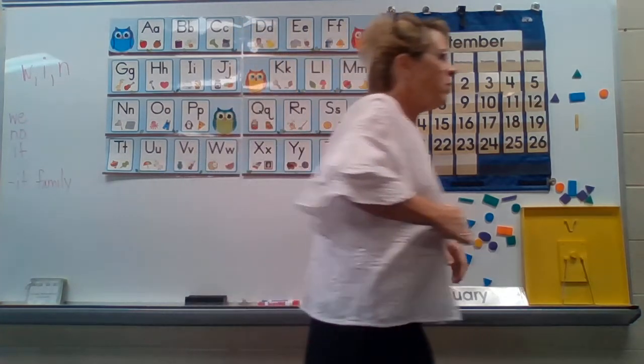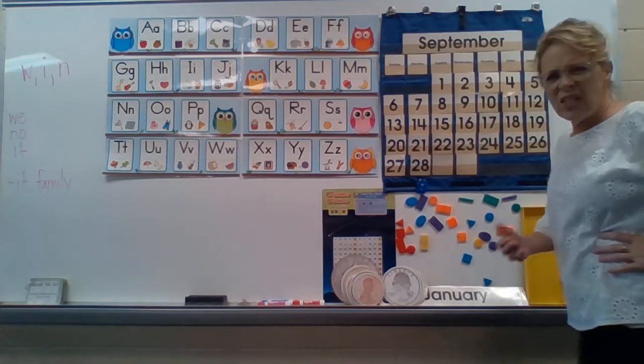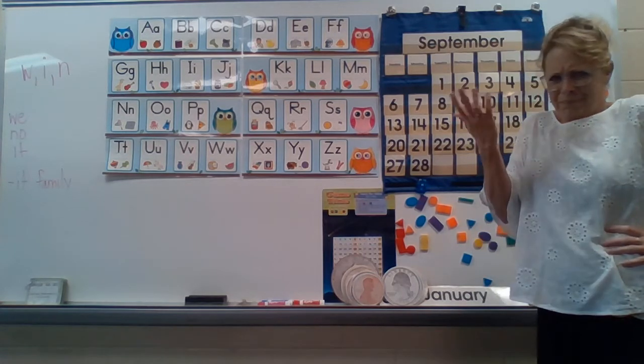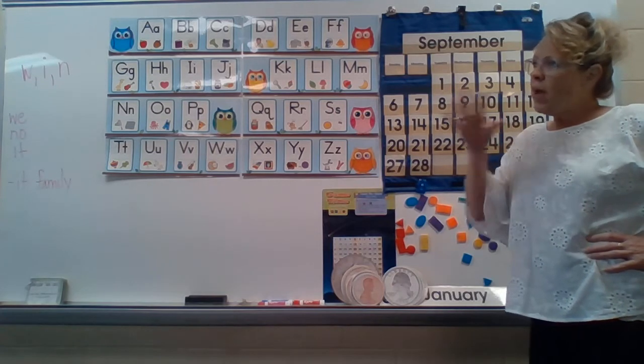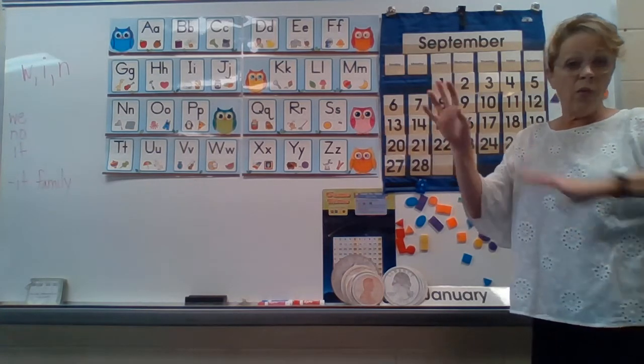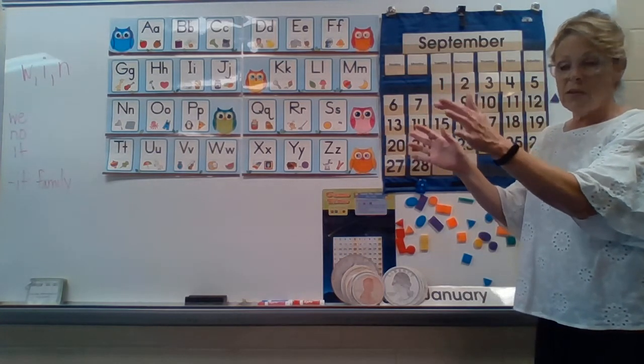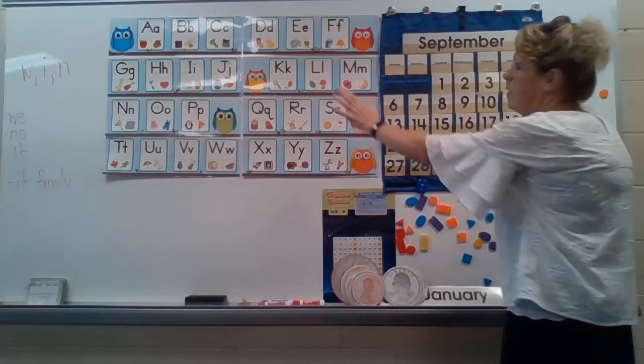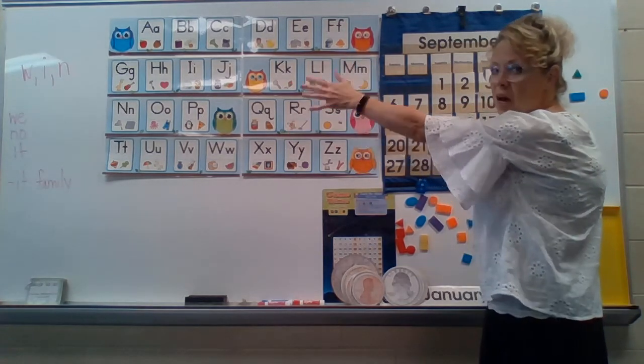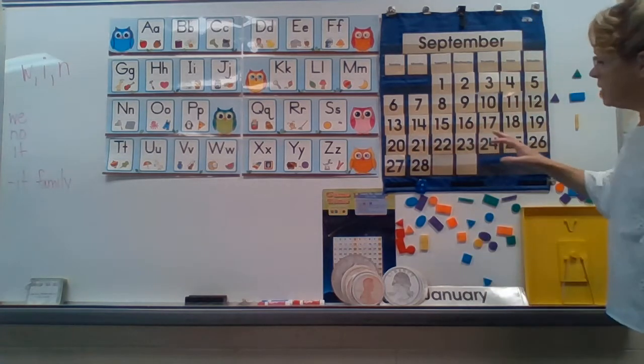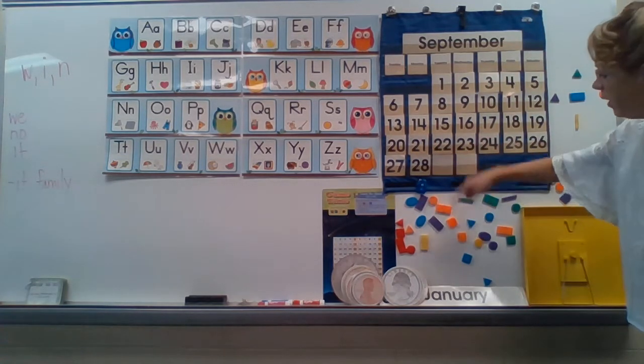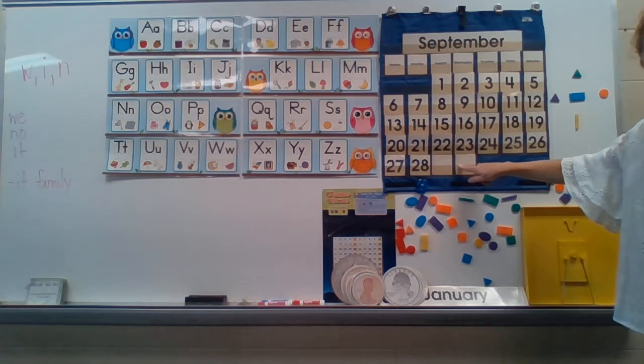Now in math, we're going to start talking about positional words. What in the world does that mean? Positional words. Well, that means where something is in relationship to something else. So I would say that my alphabet is beside my calendar, or I would say my shapes are under the calendar.